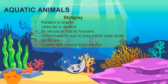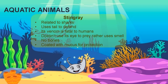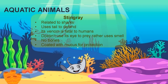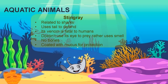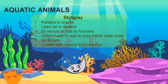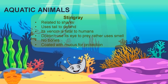I am a stingray. They are related to sharks. They use their tail to defend. Their venom is fatal to humans, so they are really dangerous. They don't use eyes to find prey — rather they use smell. No bones. Coated with mucus for protection.